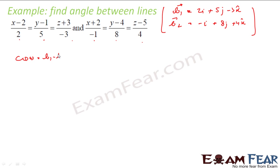Cos theta is b1 dot b2 by magnitude of b1 times magnitude of b2. And this is pretty simple. b1 vector is 2i plus 5j minus 3k dot minus i plus 8j plus 4k.